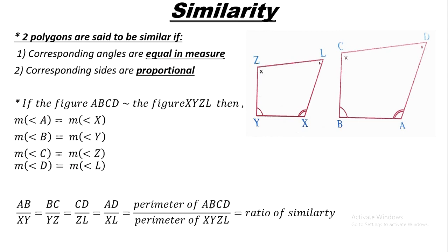This ratio also equals the ratio of the perimeter of figure ABCD to the perimeter of figure XYZL — that is the ratio of similarity. Remember, the perimeter means the sum of the lengths of the outer sides.